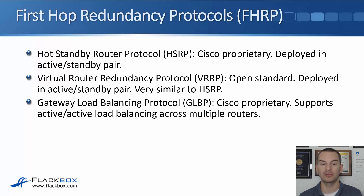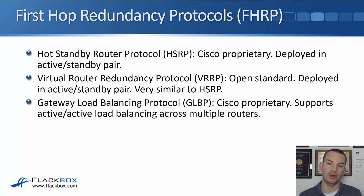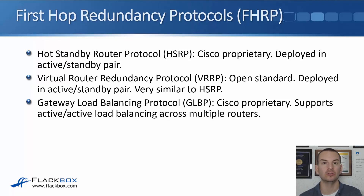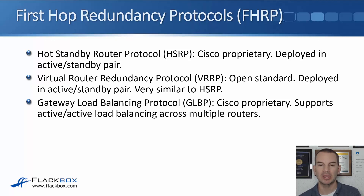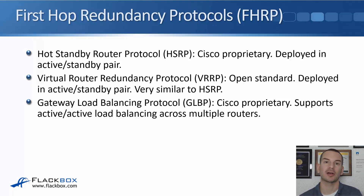The last option is GLBP — the Gateway Load Balancing Protocol. Like HSRP, this is also Cisco proprietary. With GLBP, it supports active/active load balancing across multiple routers. Rather than just being active/standby, GLBP can do load balancing between the two routers for the same IP subnet. However, GLBP is a little more complicated to set up and troubleshoot, so HSRP is the one more commonly used — and HSRP is the one covered in the CCNA exam. That's what we'll be covering in the next lecture.